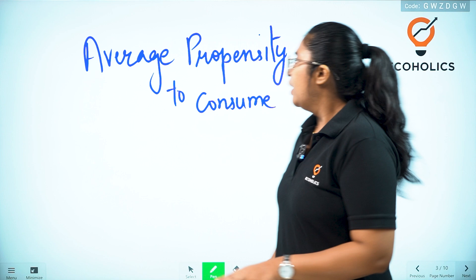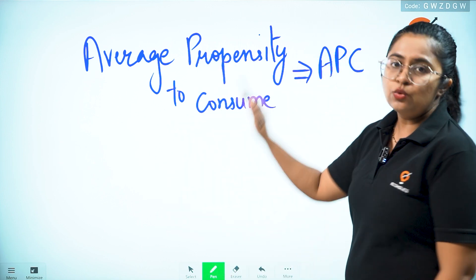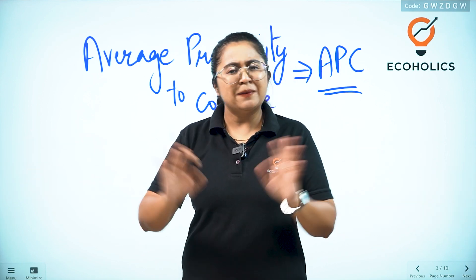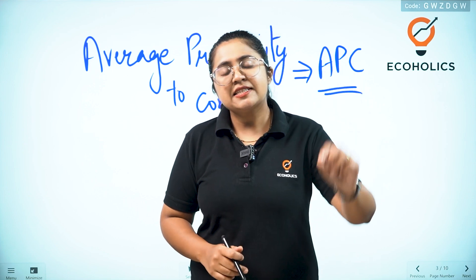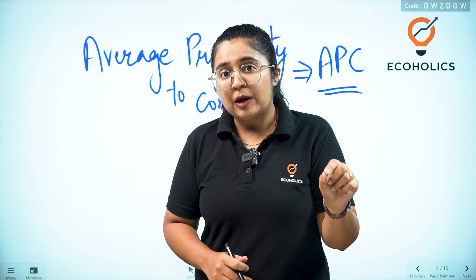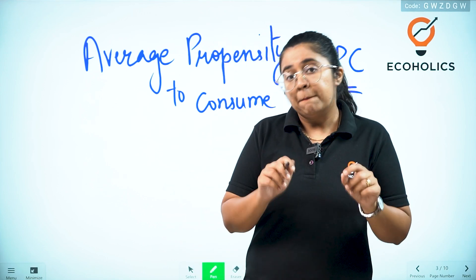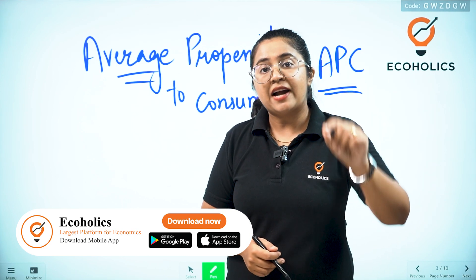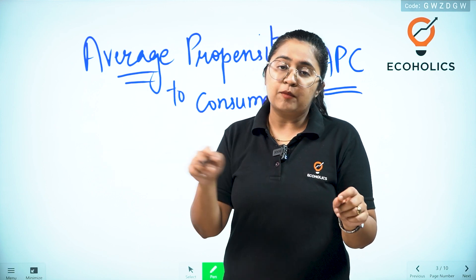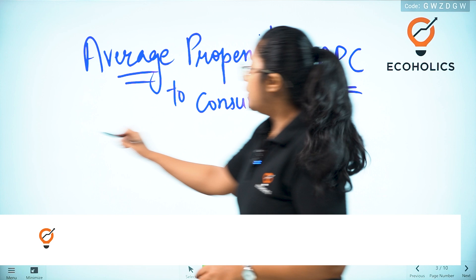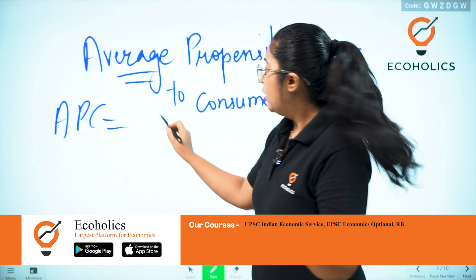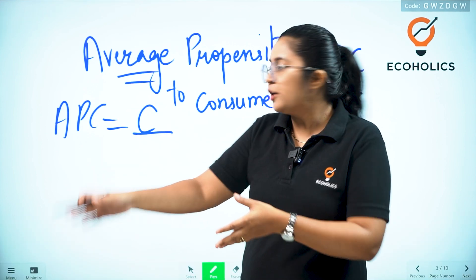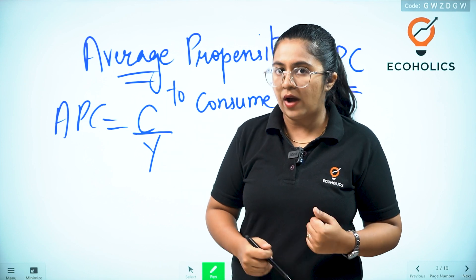In propensity to consume, we have the first term: Average Propensity to Consume, that is APC. What exactly is average propensity to consume? It's a long term but a very simple one. It is the proportion of disposable income that has been spent on consumption out of the total income of an individual. So how do we write it? APC equals consumption divided by total income — C upon Y.